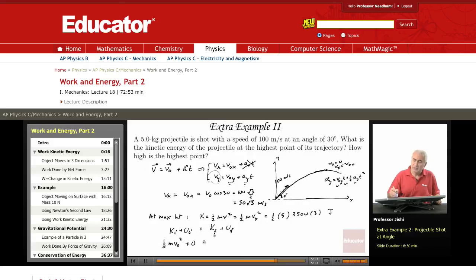KEf is just what we got here, this K, plus Uf. And Uf is just mg times the maximum height h. So since I know v0²...